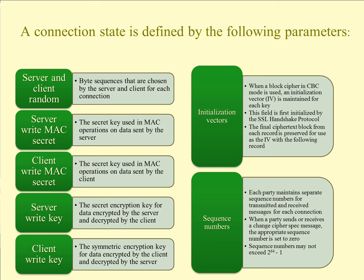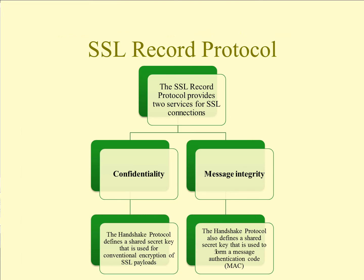The connection state is defined by the following parameters for both the server and the client. A random number — a random byte sequence. The server write MAC secret: the secret key used in MAC operations on data sent by the server. The client write MAC secret is similar but by the client. The server write key is the secret encryption key for data encrypted by the server and decrypted by the client. The client write key is a symmetric encryption key, so it's the same as the one on the server. And then the initialization vectors and sequence numbers.